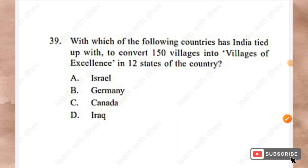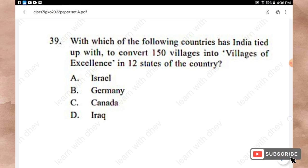Question 39: With which country has India tied up to convert 150 villages into villages of excellence across 12 states? Options: Israel, Germany, Canada, Iraq. The right answer is Option A — Israel.